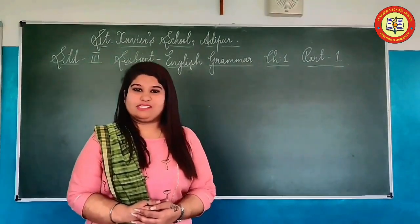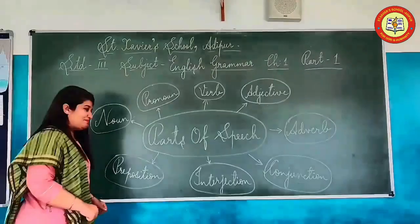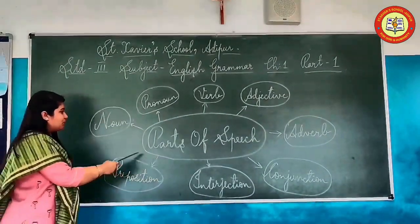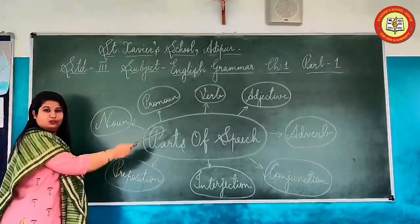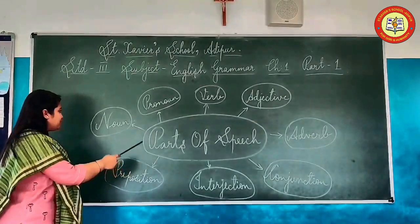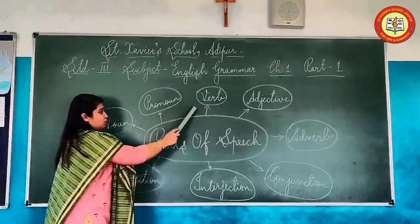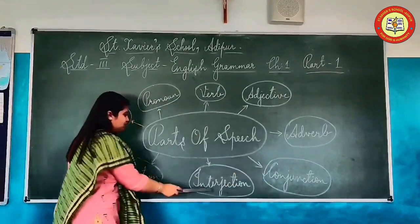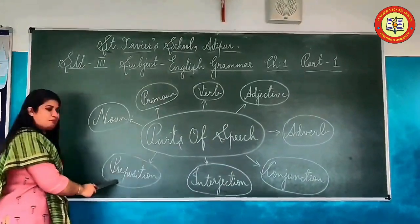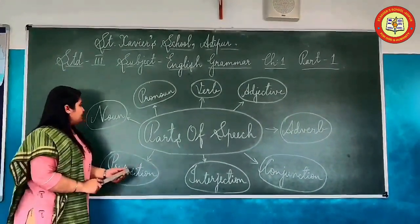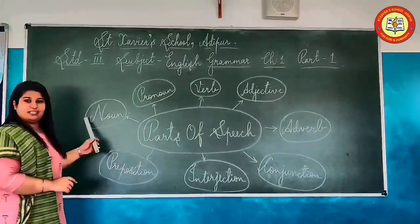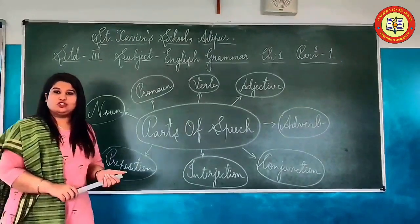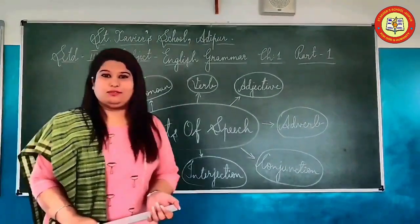First of all, we are going to revise about nouns. Parts of speech. Here you can see the diagram in which I have the parts of speech. They are noun, pronoun, verb, adjective, adverb, conjunction, interjection, and preposition. In our first chapter, we are going in detail with the topic, which includes Common Noun and Proper Noun.